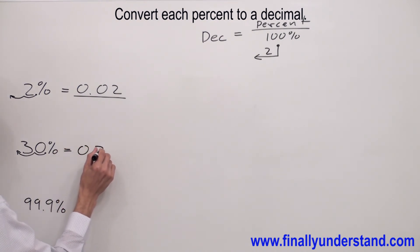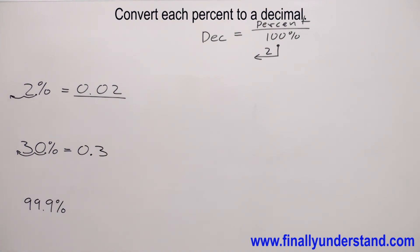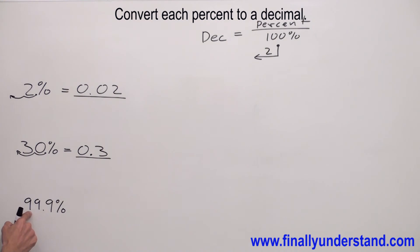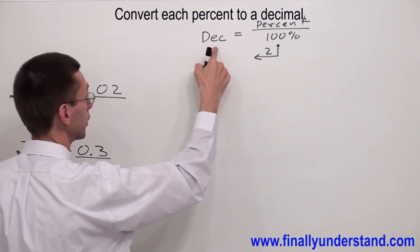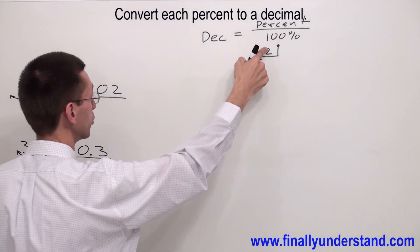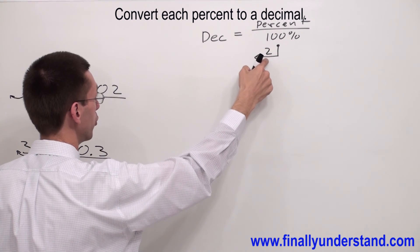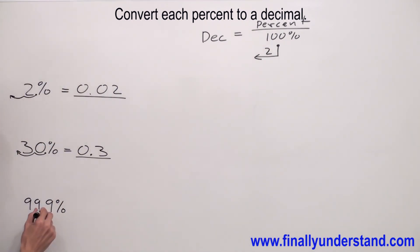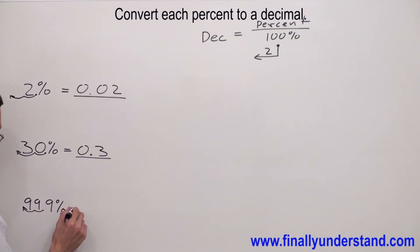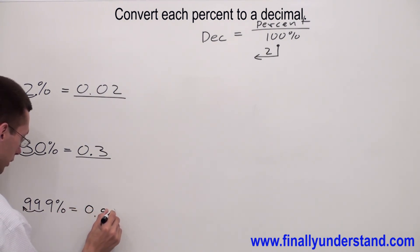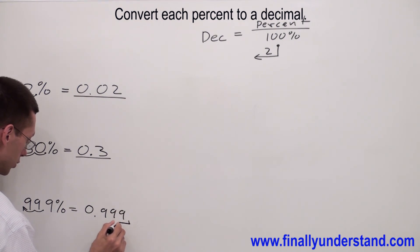Let's take a look at another one. We have 99.9% and we have to convert it to a decimal. Again, anytime you want to find the decimal, you have to divide the percent number by 100% and move the decimal point twice to the left. So I'm going to move it one, two — my answer is 0.999. This is the solution.